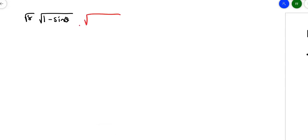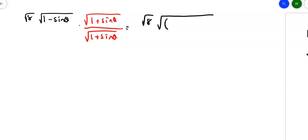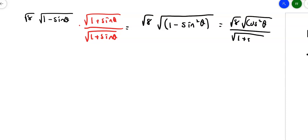Multiplying by √(1 + sinθ) over √(1 + sinθ): on top, this is a difference-of-squares pattern, so 1 − sin²θ = cos²θ. We get √8 · √(cos²θ) on top, with √(1 + sinθ) remaining on the bottom. That simplifies to √8 · cosθ divided by √(1 + sinθ).